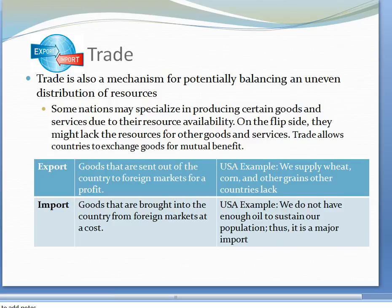Let's look at exports. Exports are goods that are sent out of the country to foreign markets for a profit. In the United States, we supply wheat, corn, and other grains other countries lack. Imports are goods that are brought into the country from foreign markets at a cost. An example in the United States is oil — we do not have enough oil to sustain our population, thus it is a major import.